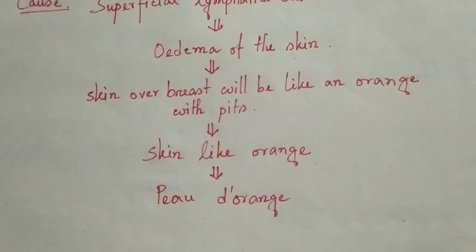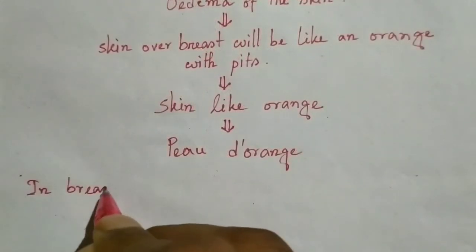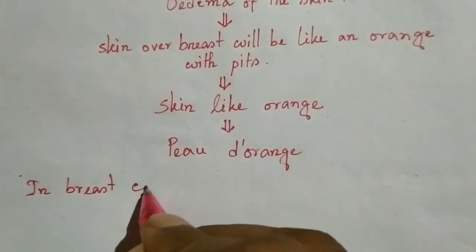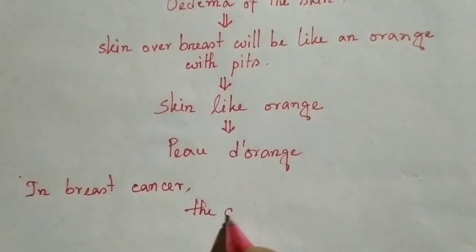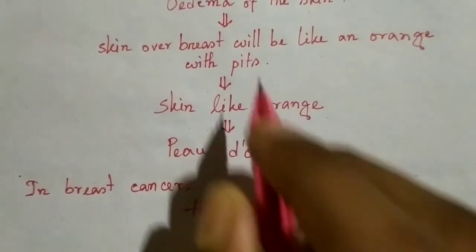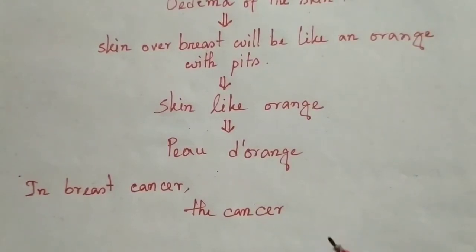In breast cancer, peau d'orange is a main characteristic. Retraction of the nipple is another important characteristic of breast cancer. The cancer cells infiltrate the superficial lymphatics, which is why the superficial lymphatics become blocked.